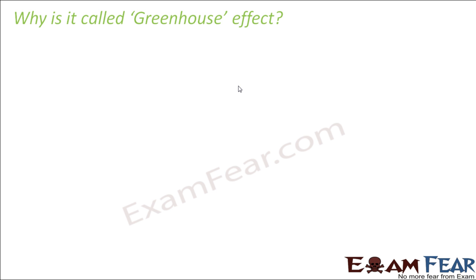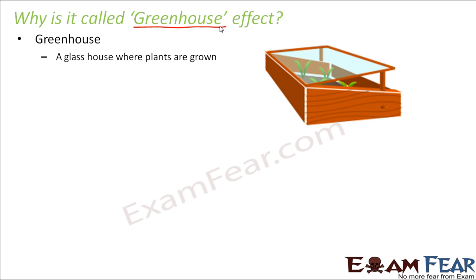A greenhouse is a glass house where plants are grown. During winters, when a lot of sunlight is not available, green plants cannot perform photosynthesis well, which is essential for their growth. So plants are grown inside a glass house. The glass has the property that when rays of the sun fall on it, it allows radiation to enter inside but does not allow it to come back out — it only allows solar radiation to enter.